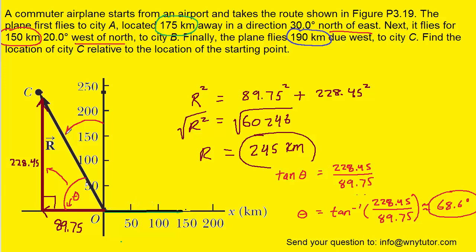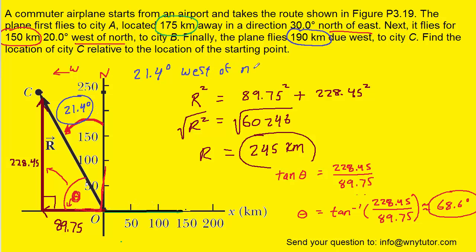Taking notice of the angle, we can regard it as being to the west of the northerly direction — north being straight up — so we express it as west of north. To find the angle west of north, since the angle we found is 68.6 degrees and there is a 90-degree angle in the right triangle, we subtract 68.6 from 90. We obtain 21.4 degrees. So we report the angle as 21.4 degrees west of north, which is consistent with the phrasing used in the original question.